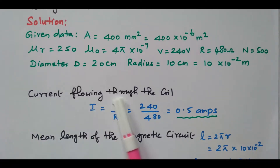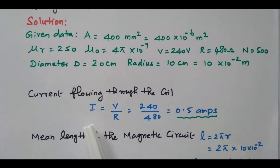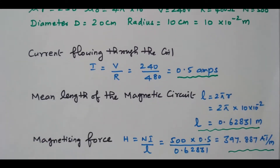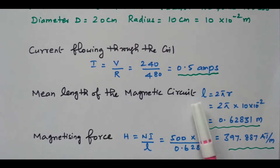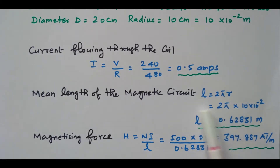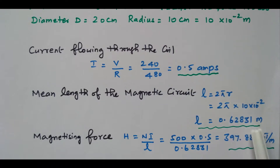Our final aim is to find the flux produced in the ring. First we find the current: I = V / R = 240 / 480 = 0.5 ampere. Then we find the mean length of the magnetic circuit: L = 2πR = 2π × 10 × 10⁻² = 0.62831 m, since the length equals the circumference for a ring in circular form.